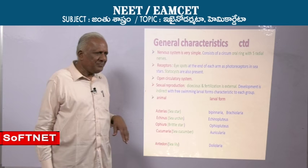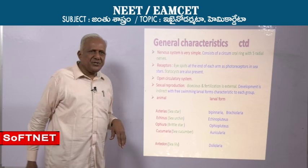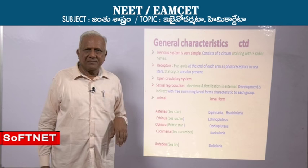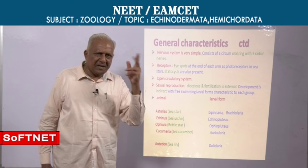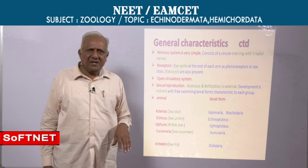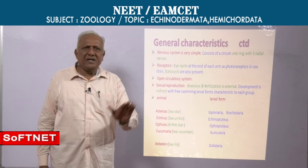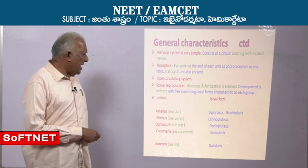They are dioecious but not dimorphic. Gametes are released into the water. Fertilization is external. Development is indirect. There are distinct larval forms. For example, Asterias has two larvae: Bipinnaria and Brachiolaria.